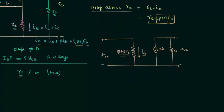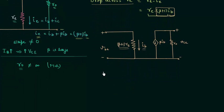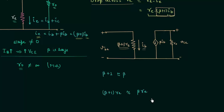There is one more simplification in this model. Beta is a large quantity, so beta plus 1 is nearly equal to beta. Therefore, the resistance beta plus 1 times RE is nearly equal to beta times RE. So we can replace this by beta times RE, and this is the final RE model for common emitter transistor.